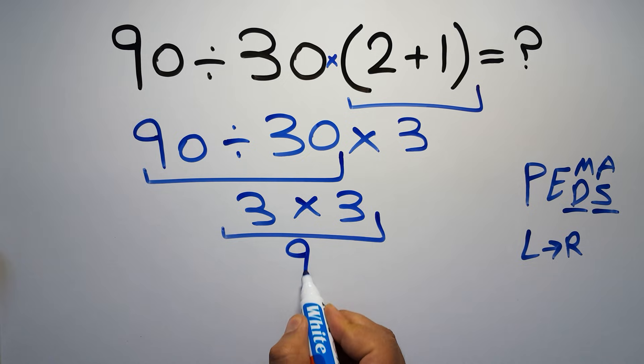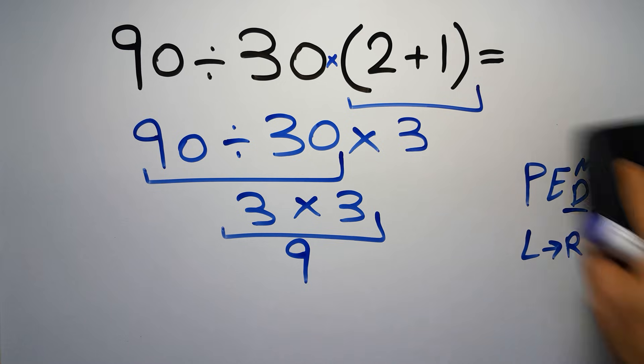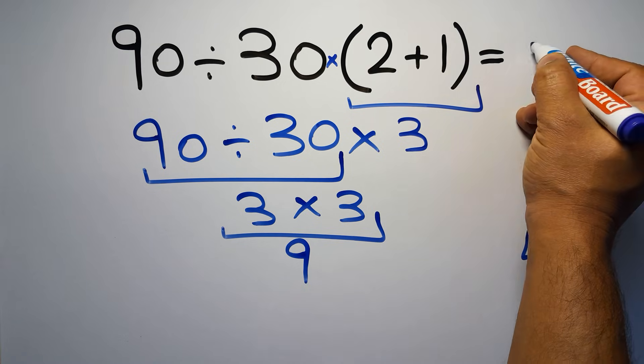3 times 3 equals 9. And this is our final answer to this problem. The correct answer is 9.